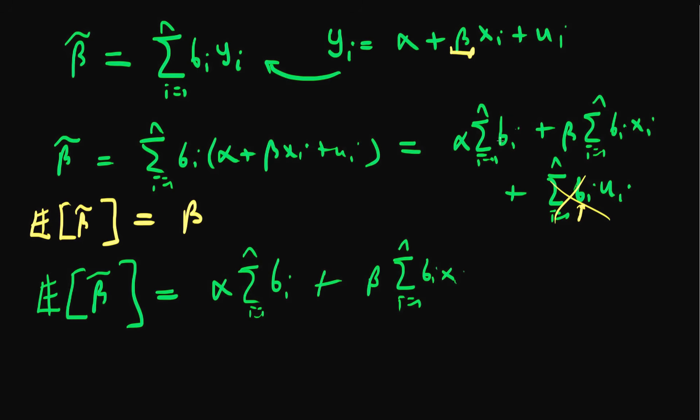So in order for this to be true, then we must have a set of conditions abided by our weights, which is namely that we've got to have the sum of i equals 1 to n of bi. It's got to be equal to zero, so that this term actually will disappear.